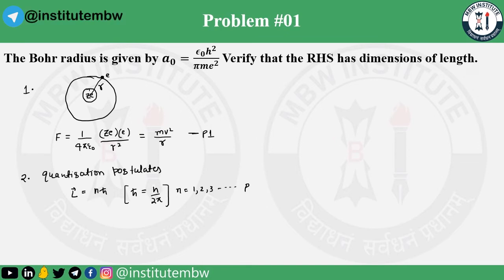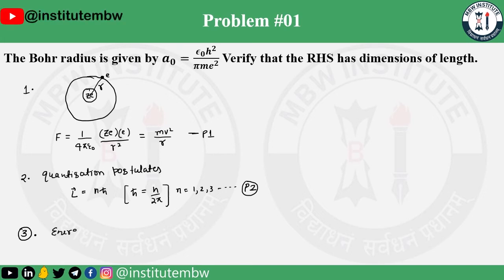Postulate 3 states that there will not be any radiation when the electron is rotating in a stationary orbit. That means the total energy remains constant when the electron is moving in the same orbit. So energy remains constant — that is Postulate 3.